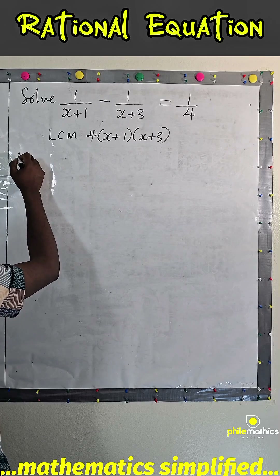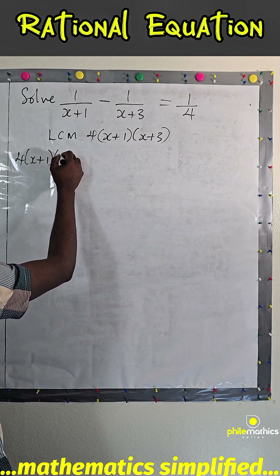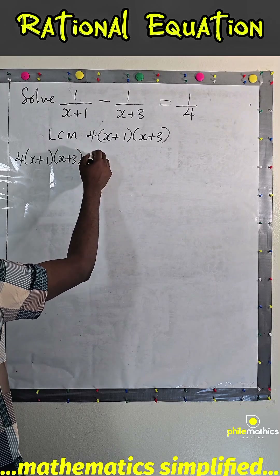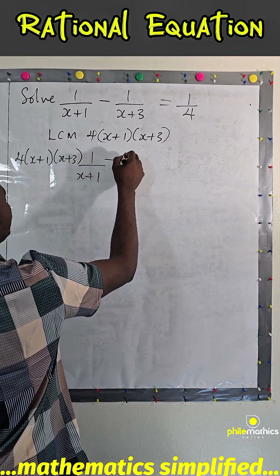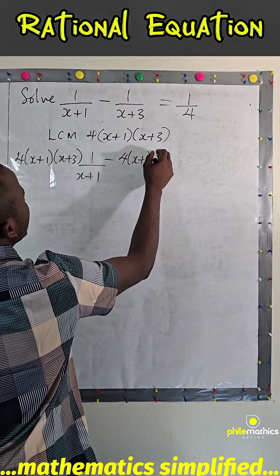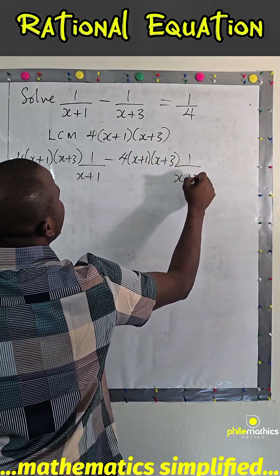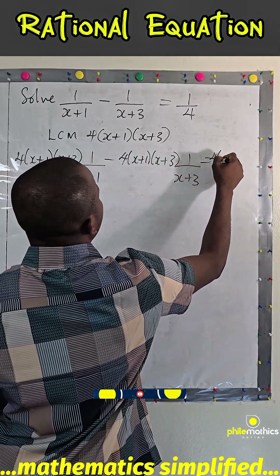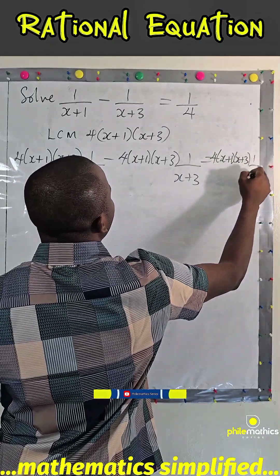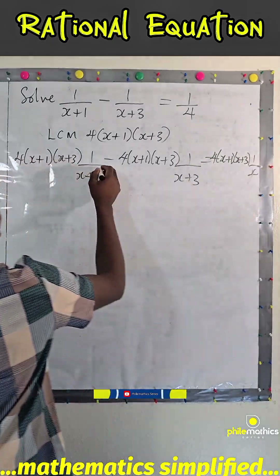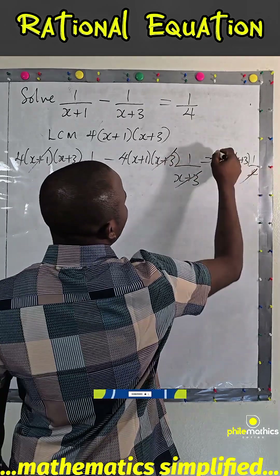So if I multiply through, I will have 4(x+1)(x+3) times 1 over (x+1), minus 4(x+1)(x+3) times 1 over (x+3), equal to 4(x+1)(x+3) times 1 over 4. So this cancels with this, this cancels with this, this cancels with this.